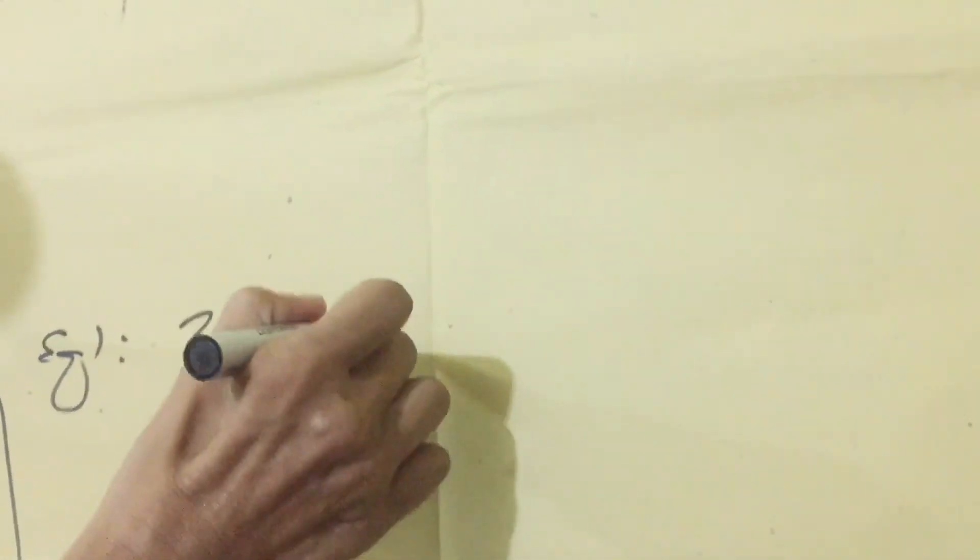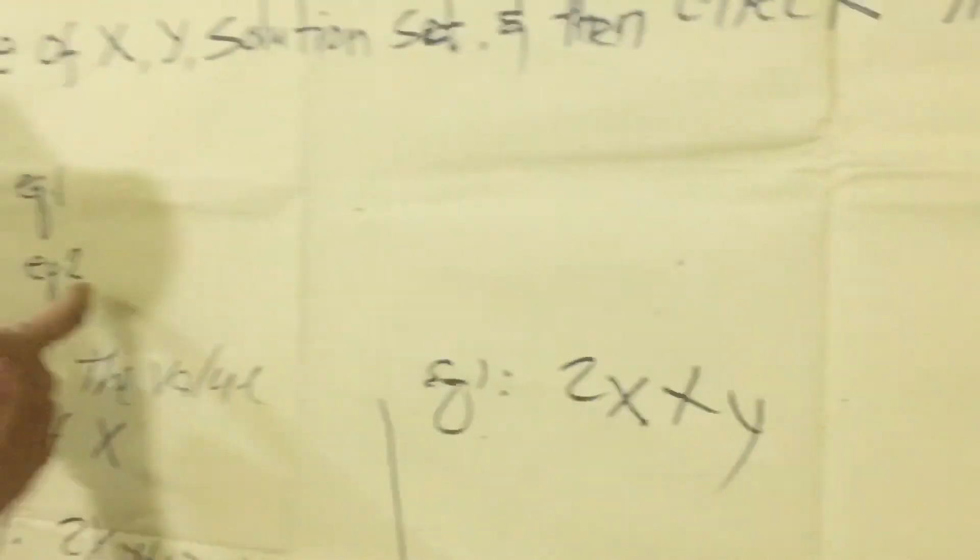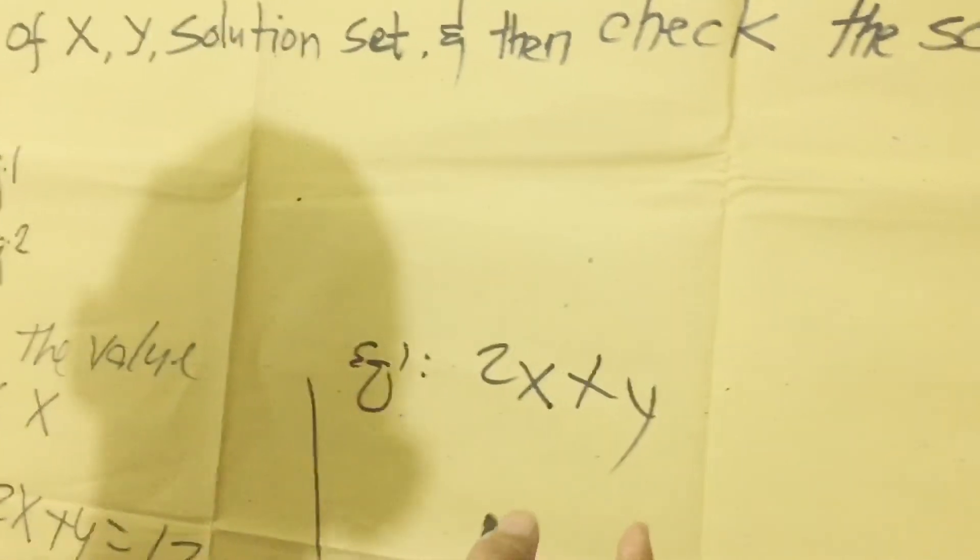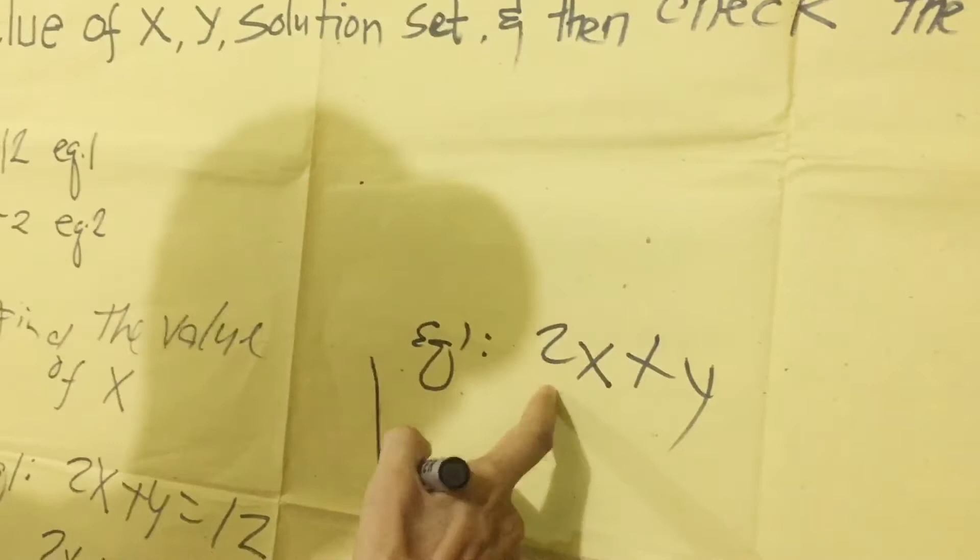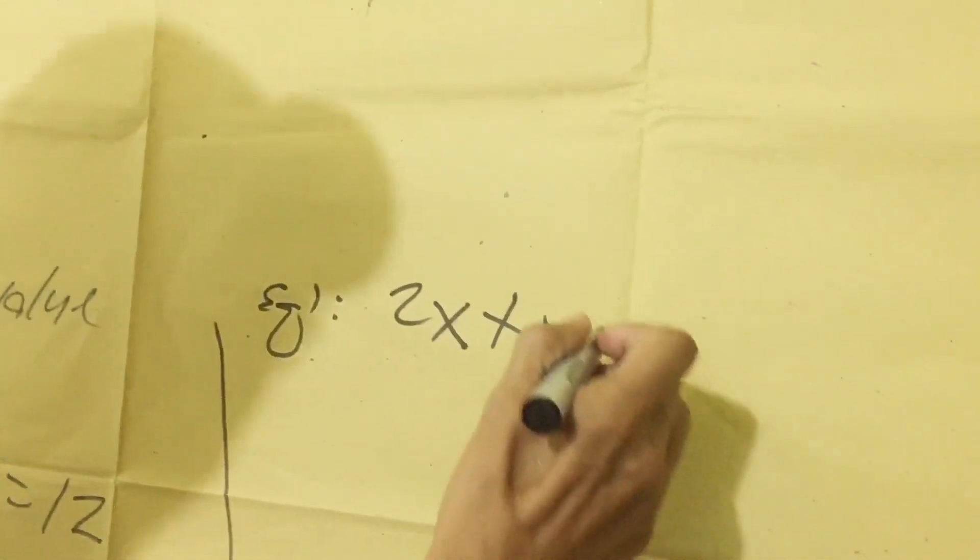Anyway, any equation, equation 1 or equation 2, we can use it in checking the result of our solution. 2x plus y equals 12.